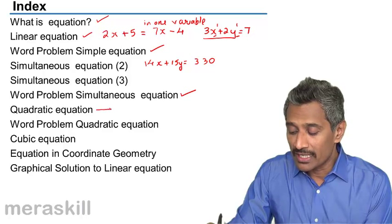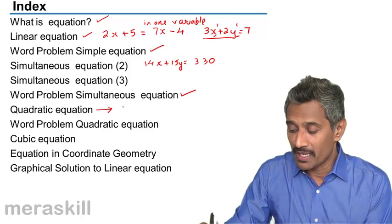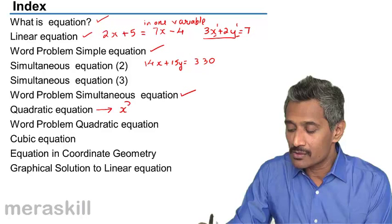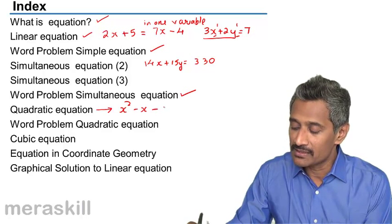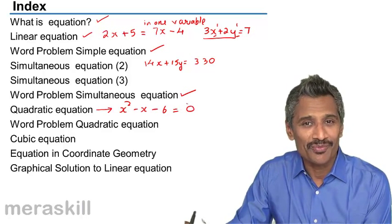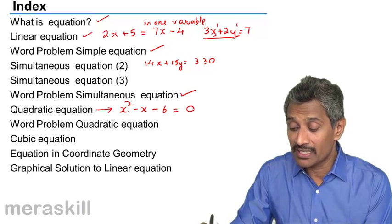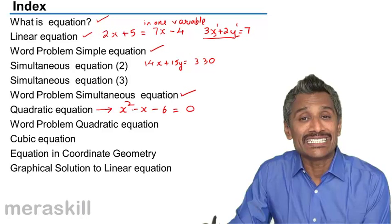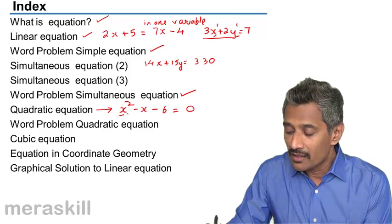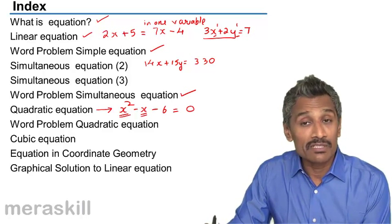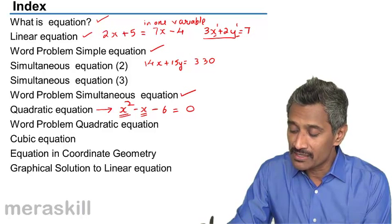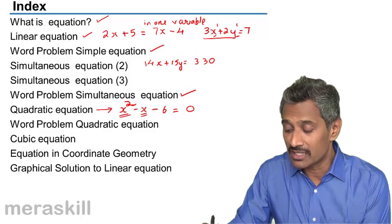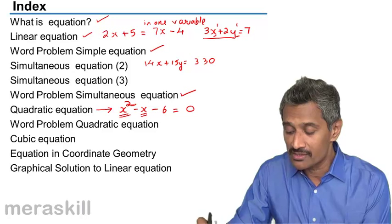Then we are going to take up quadratic equations, which will be something like this. x square minus x minus 6 is equal to 0. So here we have quadratic, generally quadratic means an equation of degree 2, which means the unknown or the variable, which is x in this case, has been raised to the power 2. So we say the degree of this particular equation is 2.